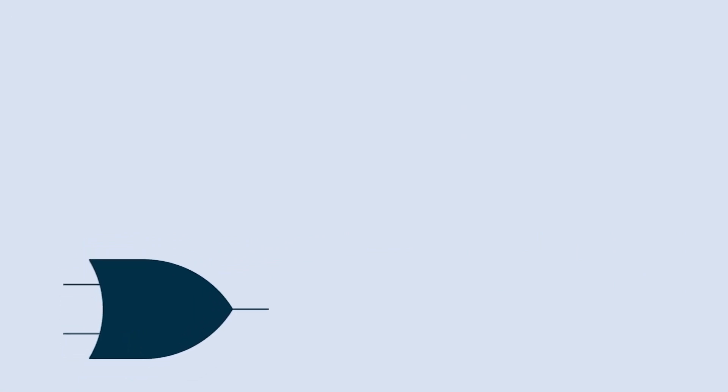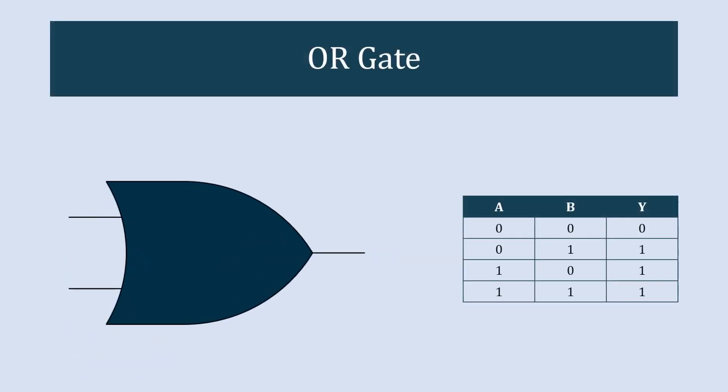The symbolic representation of the OR gate is a curved shape with inputs on the left and output on the right. This is the truth table of the OR gate. The output of the OR gate is 1 or true if at least one of the inputs is 1.